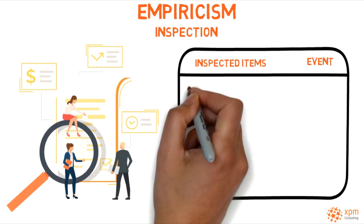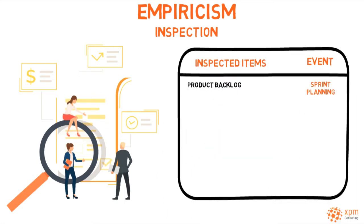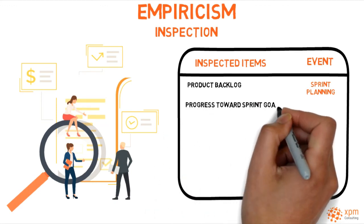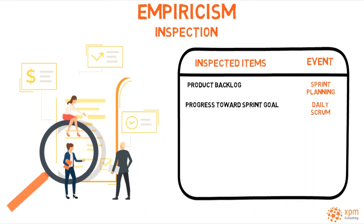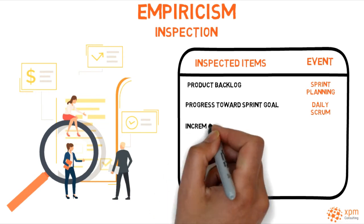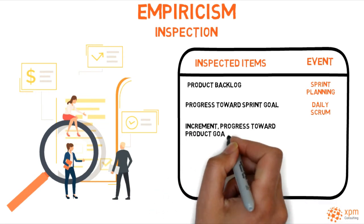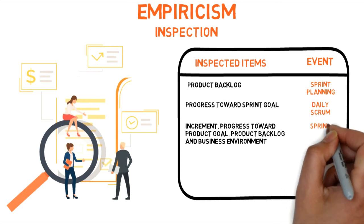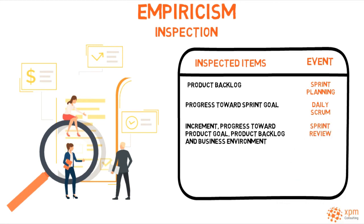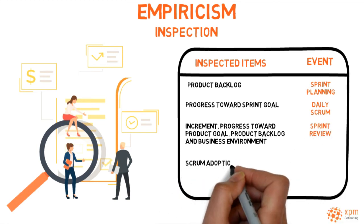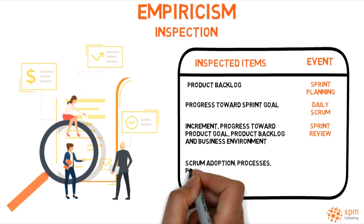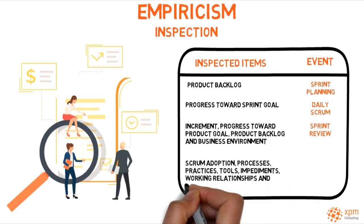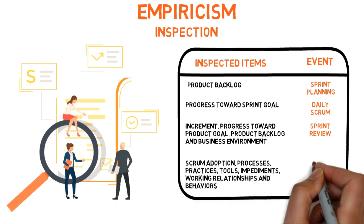The Scrum events enable frequent opportunities for inspection. Inspect the product backlog at the sprint planning event. Inspect progress toward the sprint goal at the daily Scrum event. Inspect the increment progress toward the product goal, the product backlog and the business environment at the sprint review event. And inspect the Scrum adoption, processes, practices, tools, impediments, working relationships and behaviors at the sprint retrospective event.